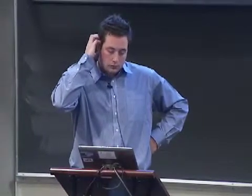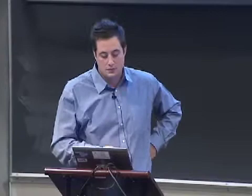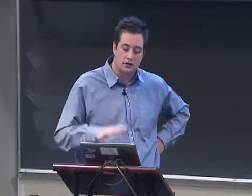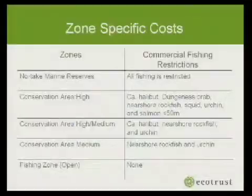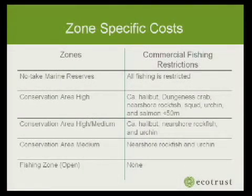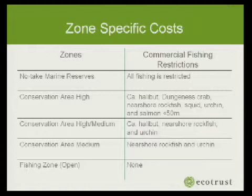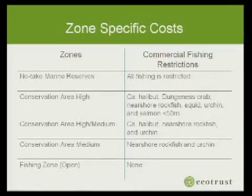In this exercise, we considered two top-level zones and some sub-zones within the conservation area, focusing only on commercial fishing activity. Conservation area 'high' allows salmon and coastal pelagic fisheries. Conservation area 'medium' allows things like Dungeness crab and squid. It's not until the fishing opening zone where they allow things with more interaction with bottom habitat, like rockfish and urchin.